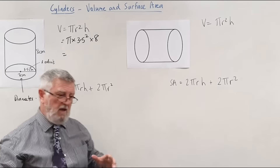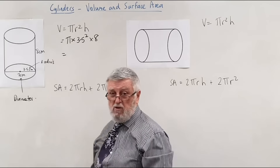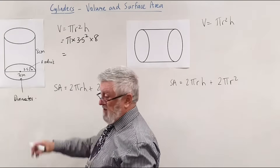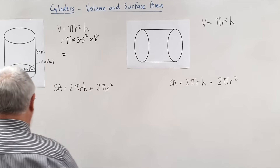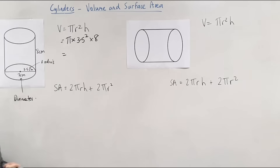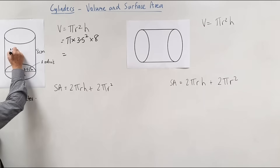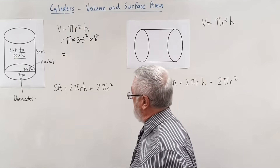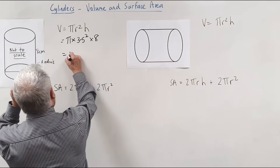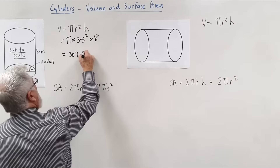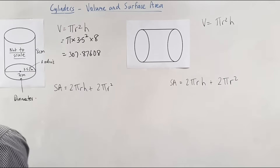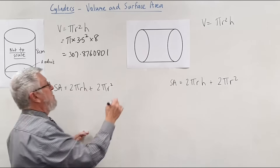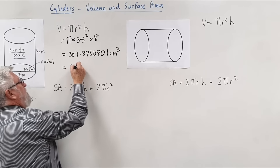Volume and surface area of cylinders are like absolute giveaway marks you can't get wrong unless they try to trick you with mixed units — meters here and centimeters there. On my calculator I get 307.876... When we're talking about volume in centimeters, we're talking about centimeters cubed. Then we're back to rounding off.